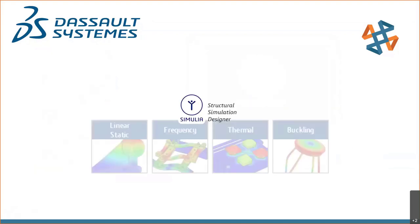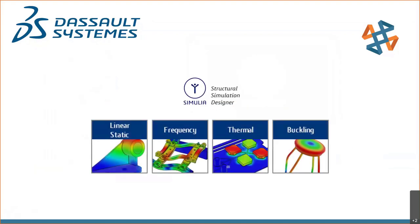Structural Simulation Designer is along the lines of Simulation Professional — the simulation product we're used to on the SolidWorks desktop. It gives us linear static, comparison assemblies, resonant frequency, conjugate heat transfer through the thermal solver, and buckling. That is the equivalent of Structural Simulation Designer on the platform.